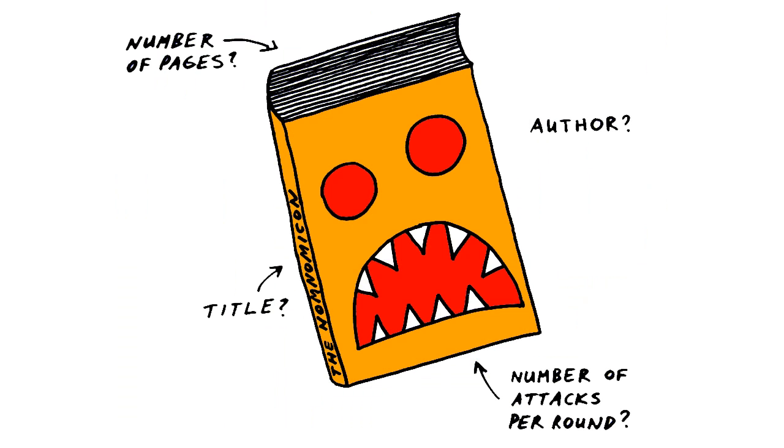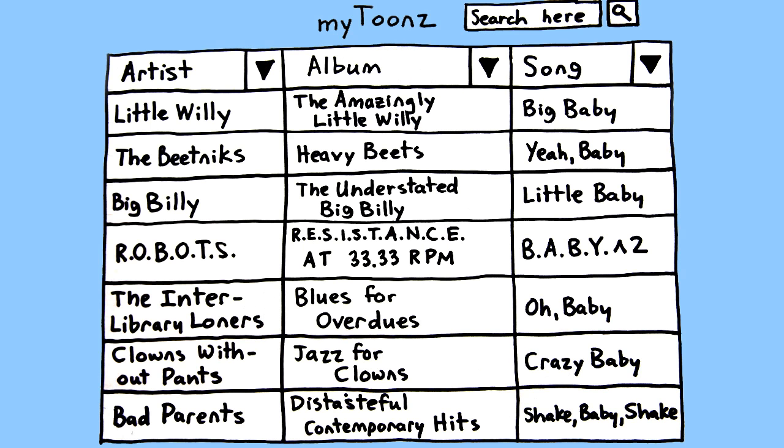Think of these as different characteristics of an item. Like songs in iTunes, which can be found by searching by artist, album title, song title, year, or genre.